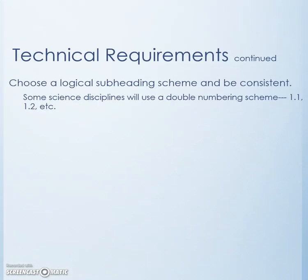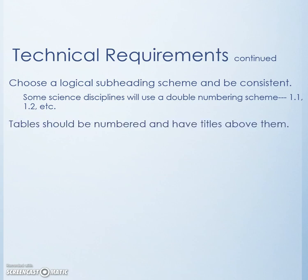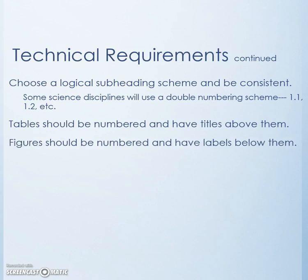You need to choose a logical subheading scheme and be consistent. Some science disciplines will use a double numbering scheme — 1.1, 1.2, etc. Tables should be numbered and have titles above them. Figures should be numbered and have labels below them.